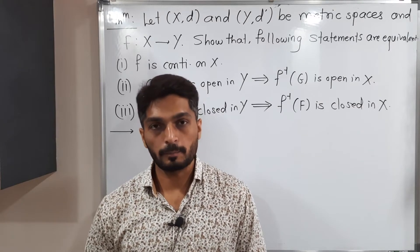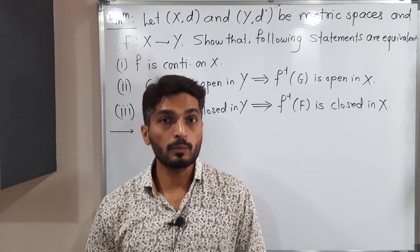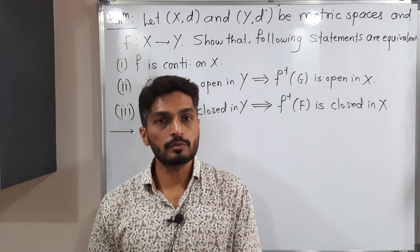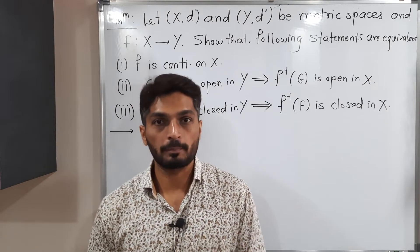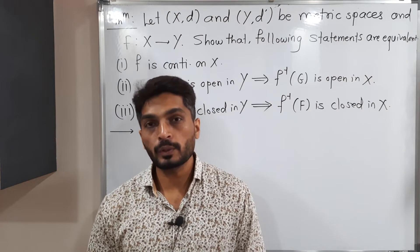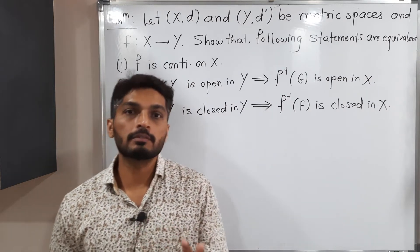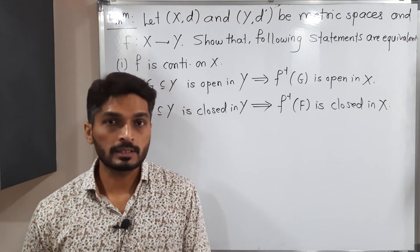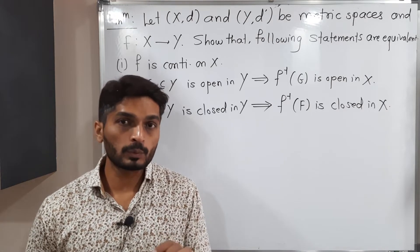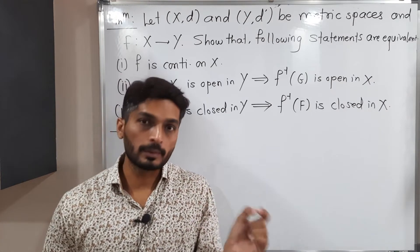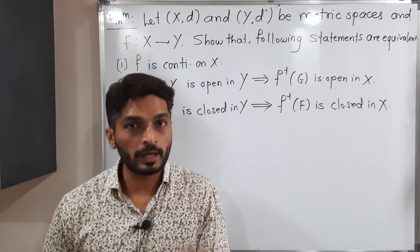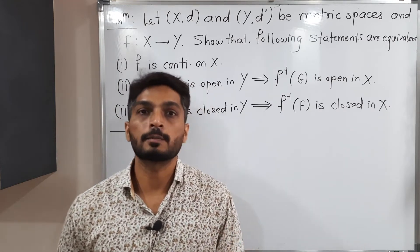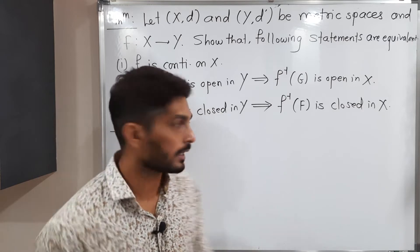Let us discuss this theorem. We have two metric spaces (X, d) and (Y, d'), and h is a function defined from X to Y. We have to prove that three statements are equivalent. I will prove that 1 implies 2, 2 implies 1, then 1 implies 3, and 3 implies 1. In this way we will prove all three statements are equivalent. Let us start.